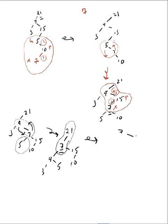So 7 pushes down the 21, 7's left child is rooted at the 4, and then this subtree goes off the 21. There is my final tree.